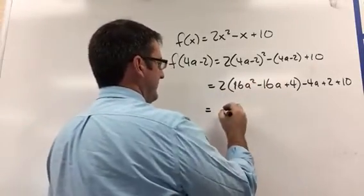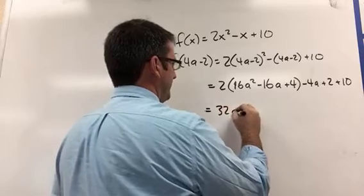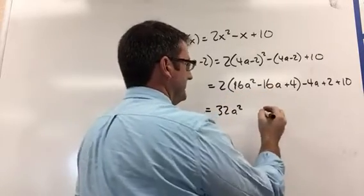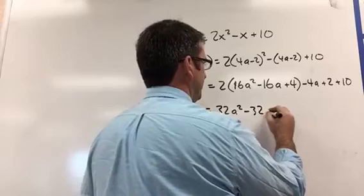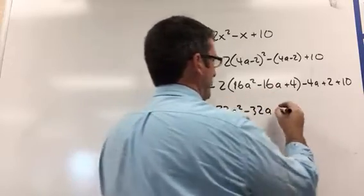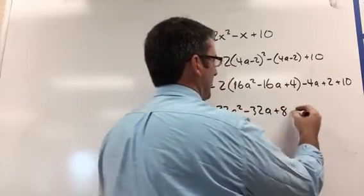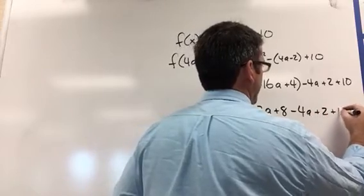So 2 times 16a squared is 32a squared. 2 times negative 16a is negative 32a. 2 times 4 is 8 minus 4a plus 2 plus 10.